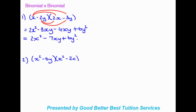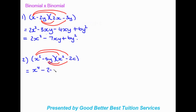Moving to the next binomial times binomial example: the first term times into both terms in the other bracket, and the second term does the same. x squared times x squared gives x to the power of 4. x squared times negative 2c gives negative 2x squared c. Negative 5y times x squared gives negative 5x squared y. Negative 5y times negative 2c gives positive 10cy. There are no like terms, so this is our final answer.